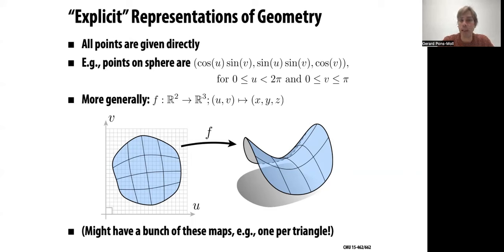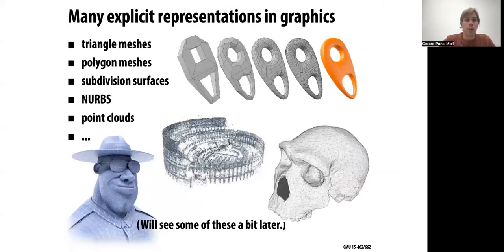You might not have an expression for the whole surface, but you might have expressions for local parts — that's one way of encoding surfaces using many local patches. There are many explicit representations in graphics: triangle meshes, polygon meshes, subdivision surfaces, NURBS, point clouds, and more. You will see and work with many of those.